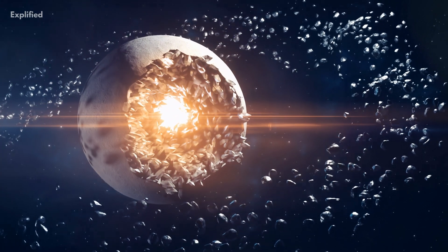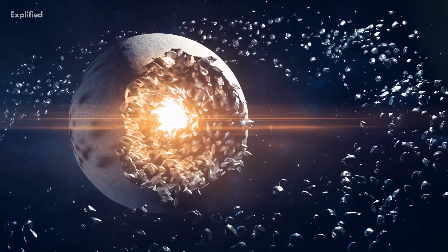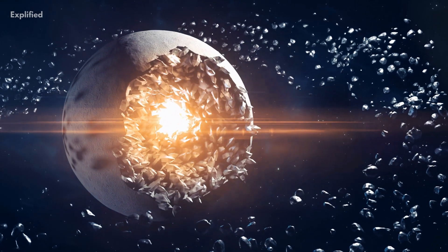The objects in the asteroid belt are mostly rocky, as opposed to the objects in the Kuiper belt which are mainly icy.